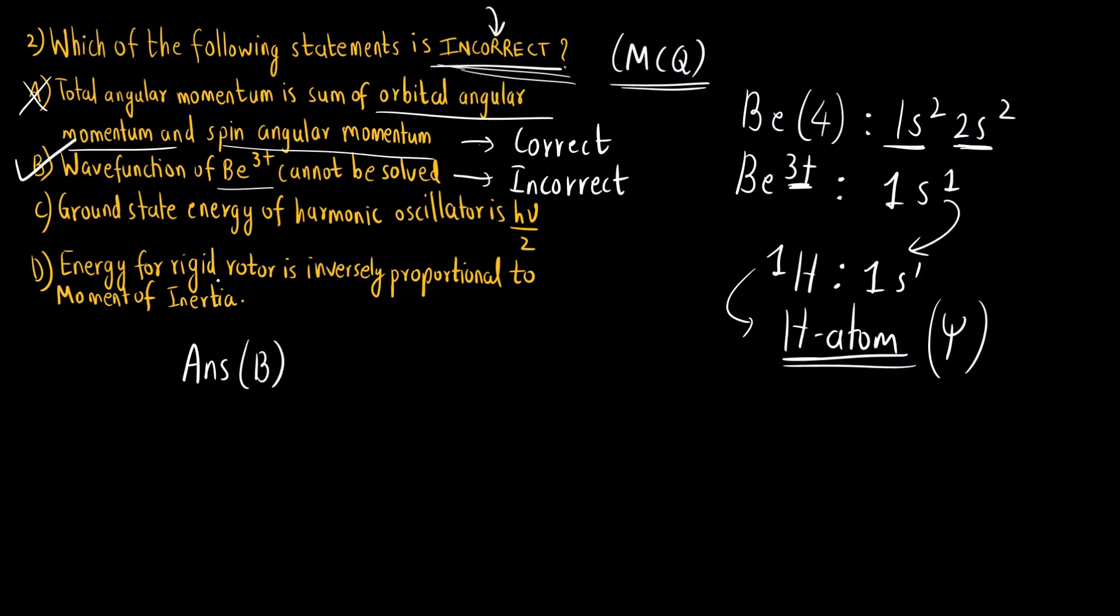Let us also see the option C and D. Ground state energy for a harmonic oscillator is hν/2. Now what is the formula for energy? We can say vibrational energy is V plus half hν. What is V here? V is vibrational quantum number.